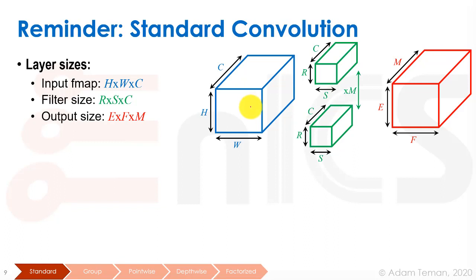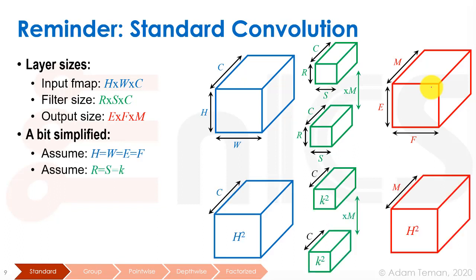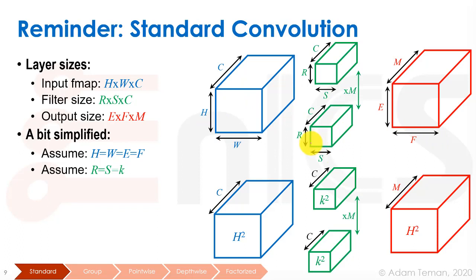To simplify, we'll assume square inputs and square filters. Instead of H by W, we'll use H squared for input size with C channels. Instead of R by S, we'll use K squared for the square kernel size with C channels. For the output, we'll assume the output feature maps are the same size as the input, so H squared with depth M. Filters are shown in green, inputs in blue, and outputs in red in most of these slides.